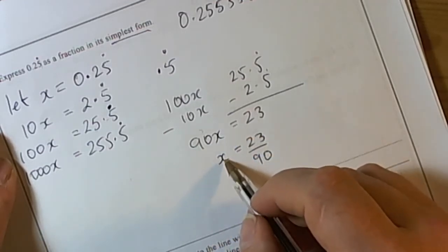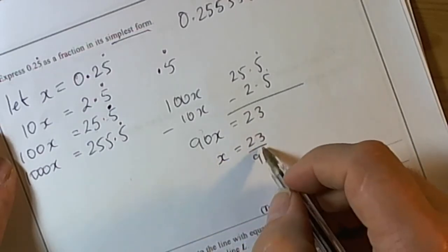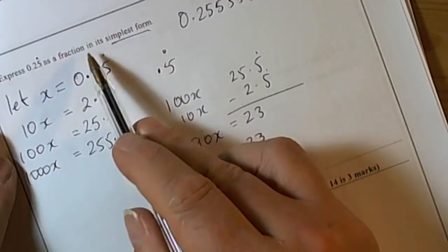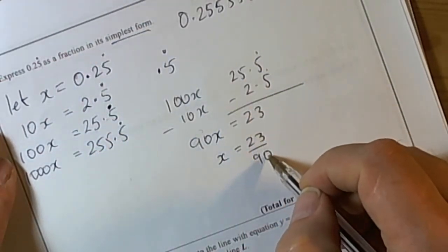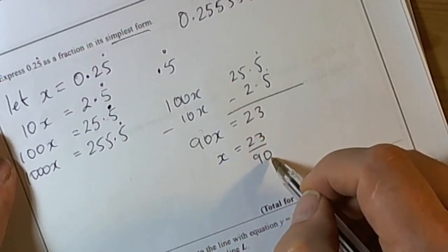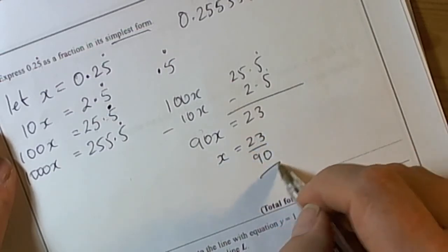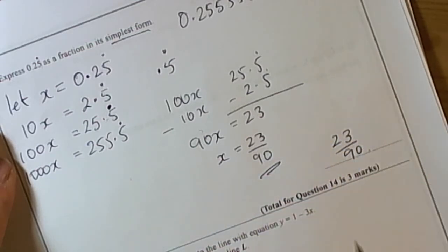We now know that these two are equal to each other - the decimal was x, the fraction is x. We've got to be careful here though because the question said as a fraction in its simplest form. We look at these two numbers and ask will it cancel down? Well, 23 is a prime number so 90 would have to be in the 23 times table, which it isn't. So our final answer is 23 over 90.